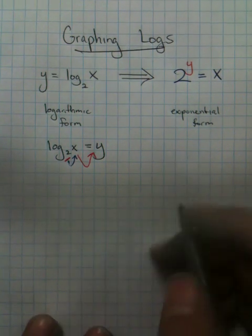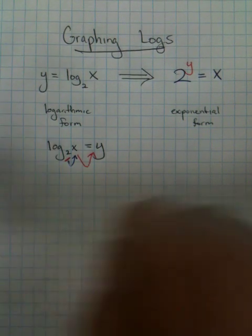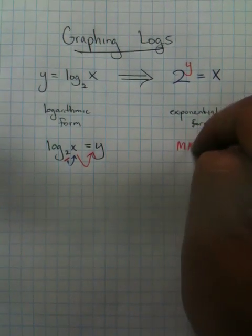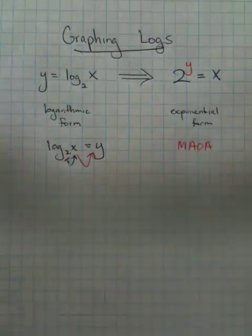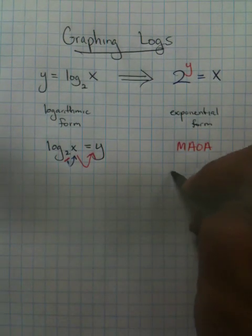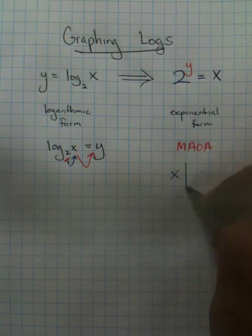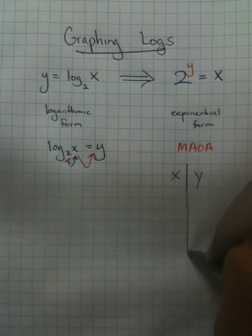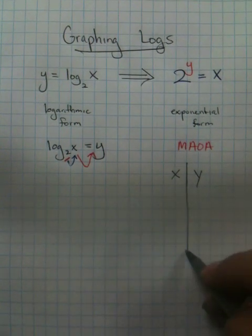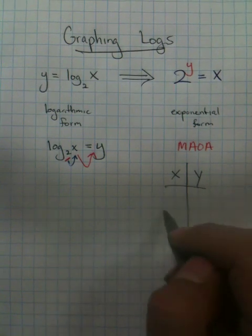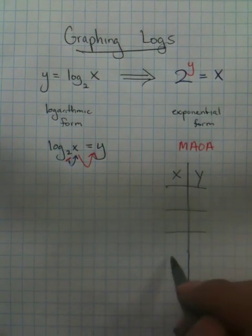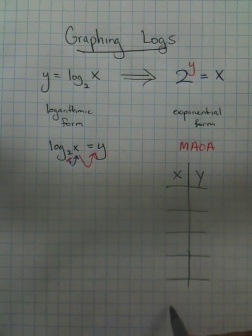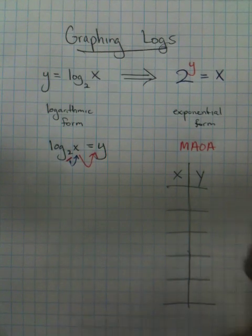Now what's the benefit of this? Well the technique I'm going to show you is called, as I said, Maoa. And what you'll do is you'll set up a table. You want to have five values for your table. It allows you to graph a much nicer logarithmic graph.